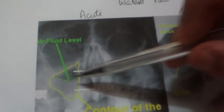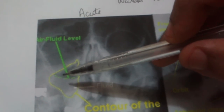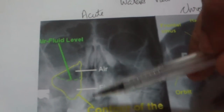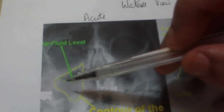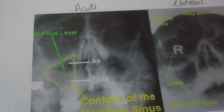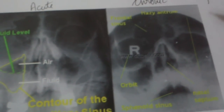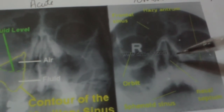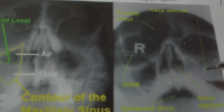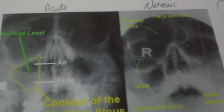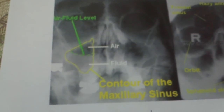In an acute sinus disease, it generally manifests as a fluid level, because there is a lot of nasal congestion and rhinorrhea, which fills the sinus with an air-fluid level. Chronic sinus disease, however, manifests as inflammation, enlargement, or increase in thickness of the nasal sinus lining, and as a consequence manifests as haziness.